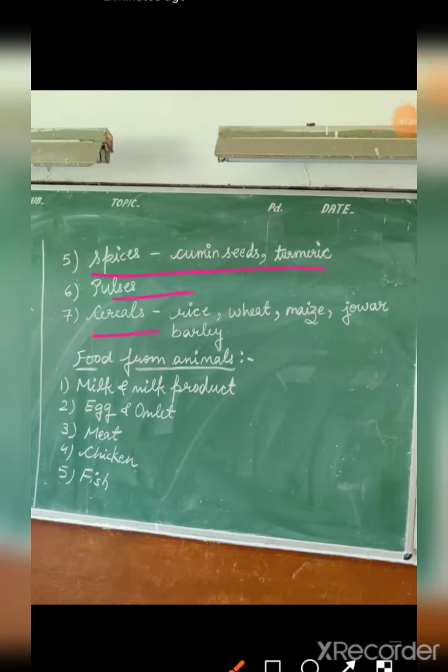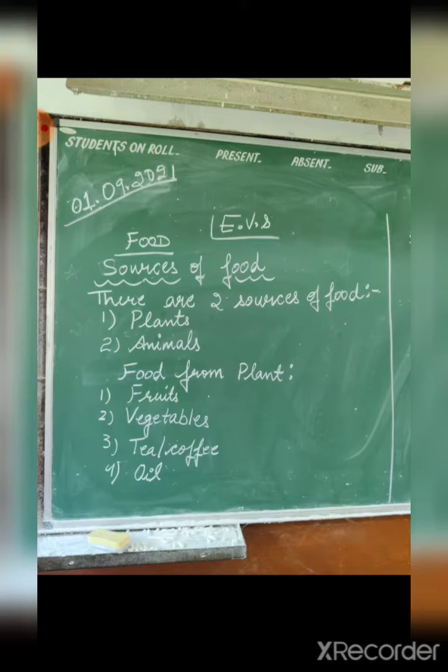Dear children, today we have done the food topic. I am repeating it again. Basically the sources of food — we have discussed where we get food from. You get food from two places — two sources. What is the source? What is the origin? Where do you get your food? Two different things: one is plants and the second is animals.